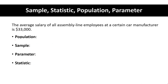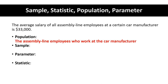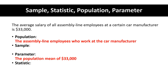The average salary of all assembly line employees at a certain car manufacturer is $33,000. The population is all the employees who work on the assembly line at this car manufacturer. There is no sample — we know this because of the keyword 'all.' So we're only talking about the population. The parameter is the population mean of $33,000, a value describing the population. Because there was not a sample, there is not a statistic.